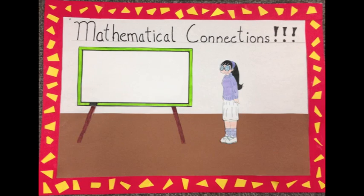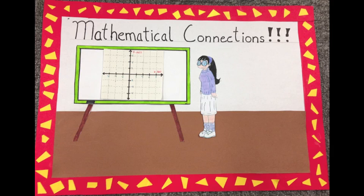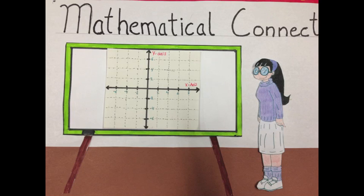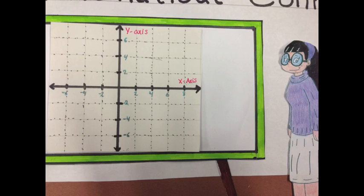The first mathematical connection is that it uses four-fold symmetry, meaning it reflects from left to right and top to bottom. Another connection is that it uses a Cartesian coordinate plane. On the plane, each quadrant can be one of the four symmetrical sides. To instruct where one dot will be placed, you will have an x-coordinate horizontally and a y-coordinate vertically. These points can be negative or positive. Four points will reflect each other using four-fold symmetry.